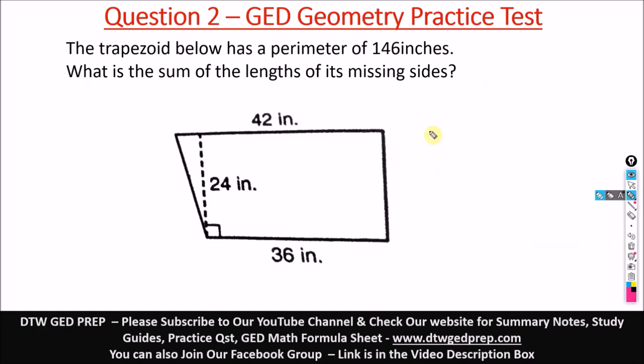Question two of the GED geometry practice test says the trapezoid below has a perimeter of 146 inches. What is the sum of the length of its missing sides? When we talk about perimeter, perimeter is the summation of all sides of any shape.